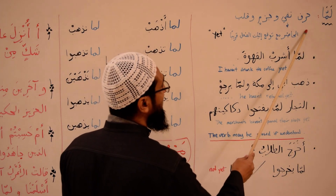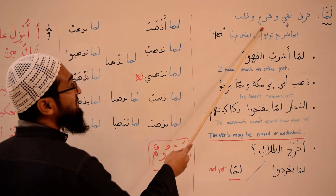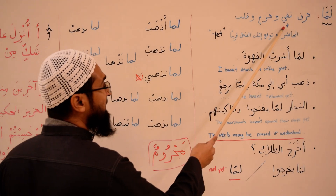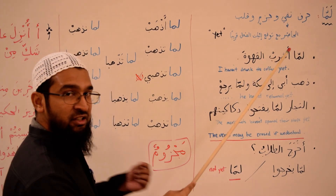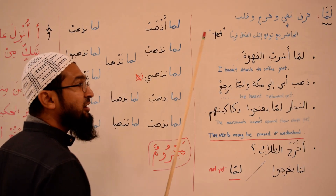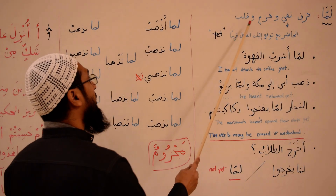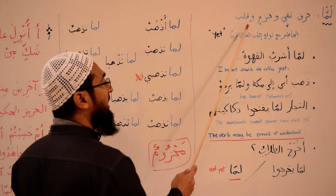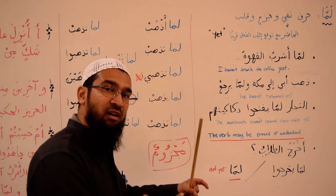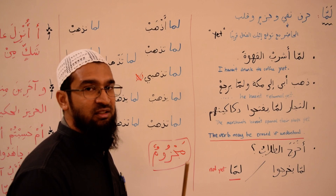Lamma is defined as harfu nafi wal jazmin wa qalb. It's a harfu of nafi, of negation, just like lam. Wa jazmin — it makes the fi'al mudaari' majzoom, just like lam. Wa qalb — and it also changes the meaning from mudaari' to madi, from present tense to past tense.